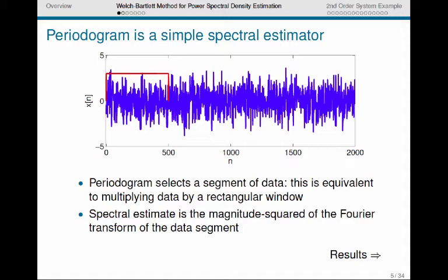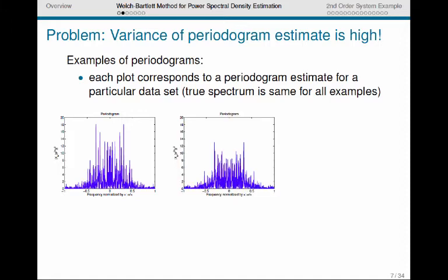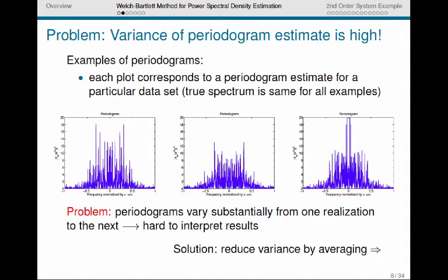Here are the results if we did that with this data set. This is an example of a periodogram for that first data segment. If we take another block of data from the same data set, we get that periodogram. And if we take a third block of data from the same data set, we get this periodogram.